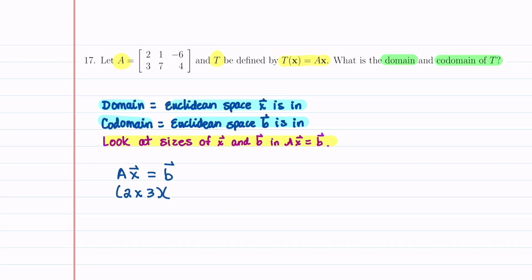In order to multiply it by a vector X, this inner number has to match. So our X has to be a three by one matrix.